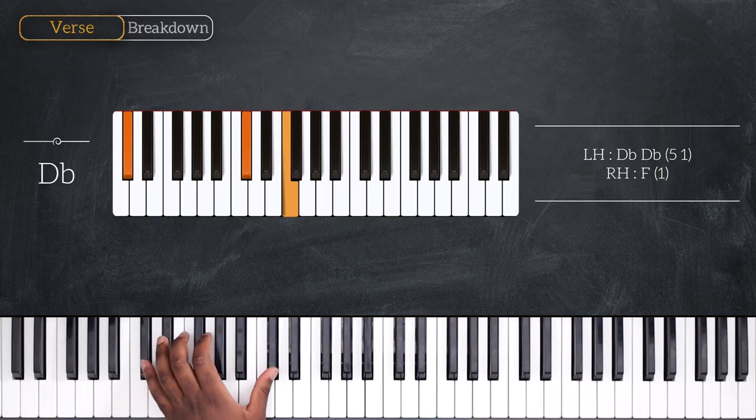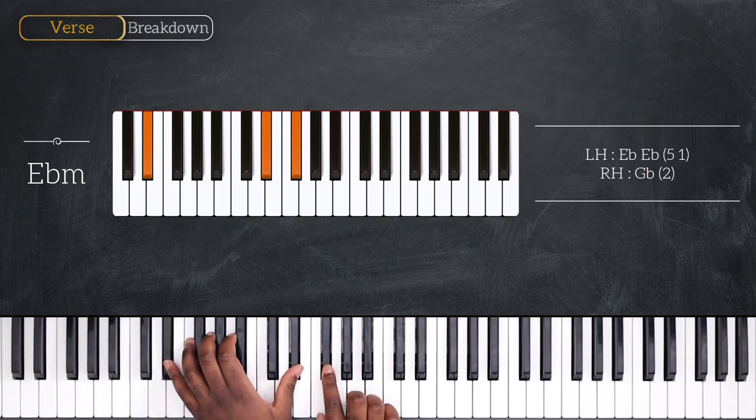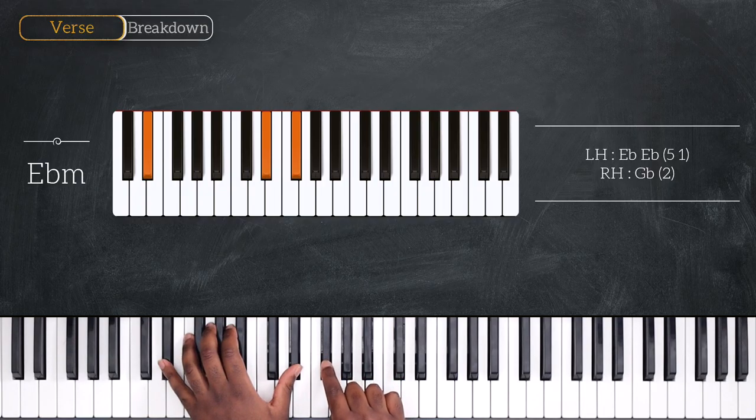Octave Db on my left with F right hand. And then from here, I'm going to go up in the key of Db with Eb minor, octave Eb, Gb right hand, and up again playing this.